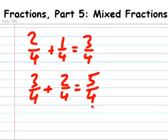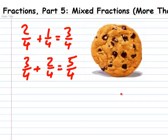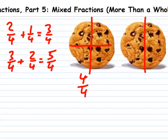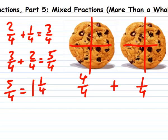But wait a minute. If I have a cookie and I break it into 4 equal parts, that's fourths. If I have 4 fourths, that's the whole cookie. So how can I have 5 fourths? I'd have to have my whole cookie and part of another one. 1 and a fourth. And that's exactly how you write it. 5 fourths equals 1 and 1 fourth. That's called a mixed fraction.